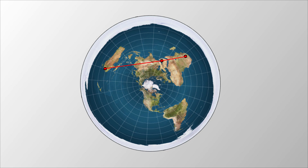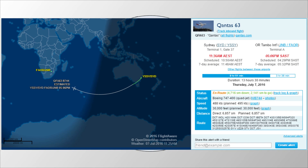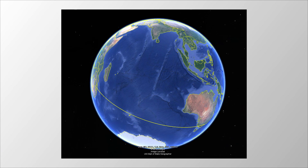A common claim by flat earthers is that there are no commercial flights between South Africa and Australia. If you want to make that trip, you have to stop over in Dubai or something like that, which of course would make sense on a flat earth. But as always, the flatties are wrong. Not only are there direct flights between Johannesburg and Sydney, they only take 13 hours and 30 minutes — less than it takes to travel from LA to Sydney — which of course makes perfect sense on a spheroidal earth. The distance is a bit shorter: 6,857 miles.